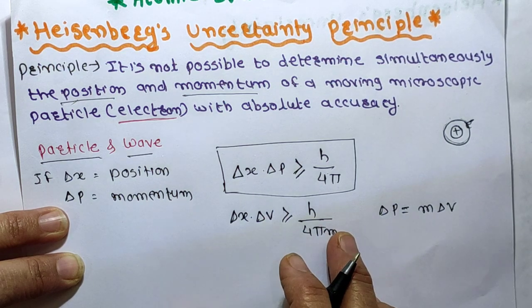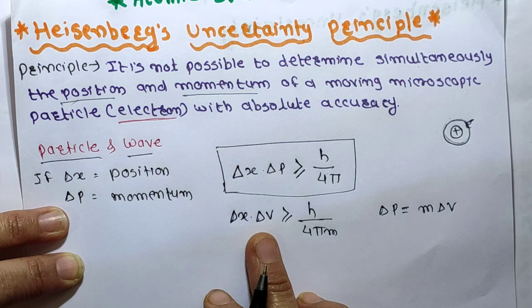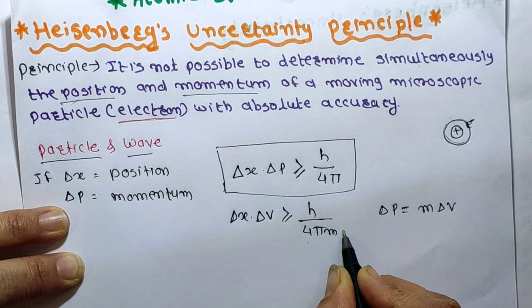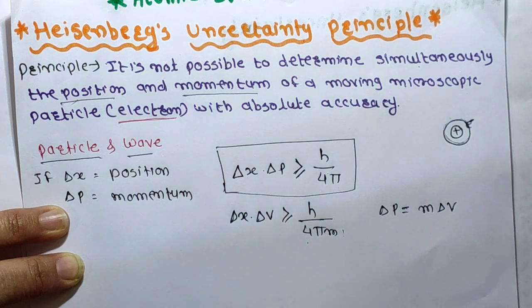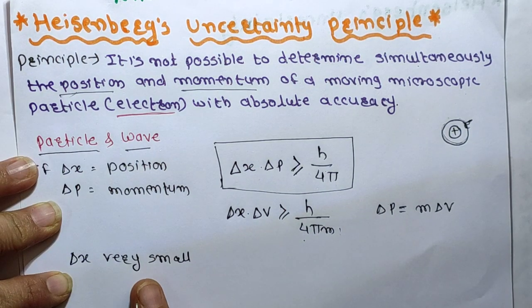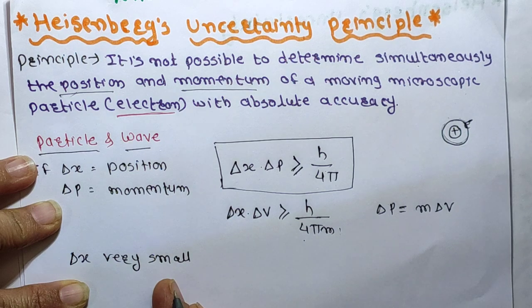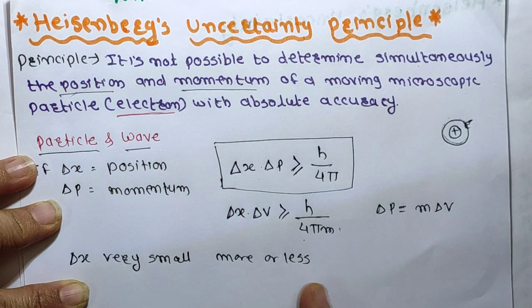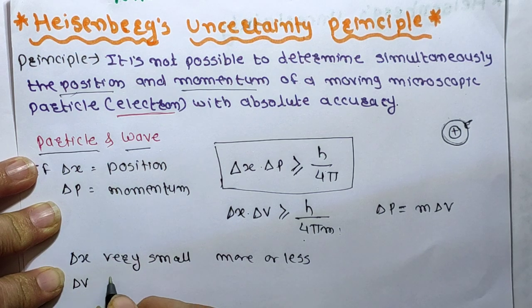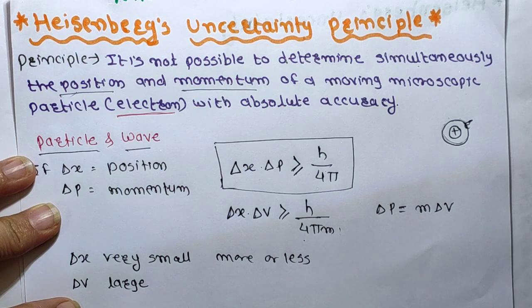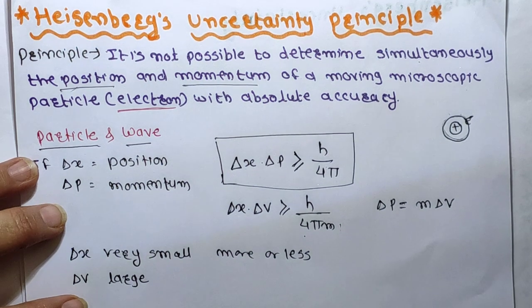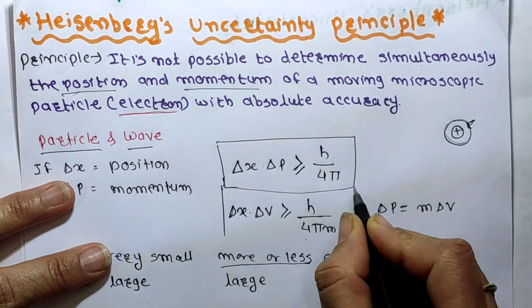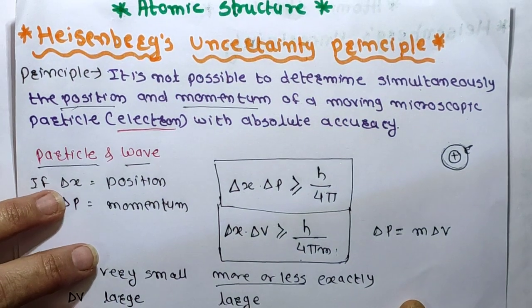From this equation it is clear that the minimum uncertainty in simultaneously determining position and velocity equals h upon 4 pi m. This means smaller the mass m, greater will be the uncertainty. If delta x is very small, that is position of the particle is known more or less exactly, then delta v will be large — meaning the uncertainty in determination of velocity is large. From these two equations we can solve questions on the uncertainty principle.